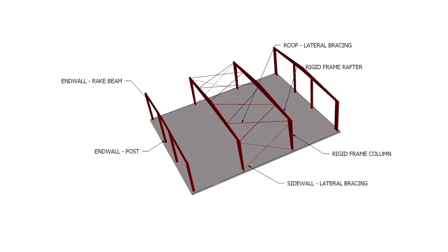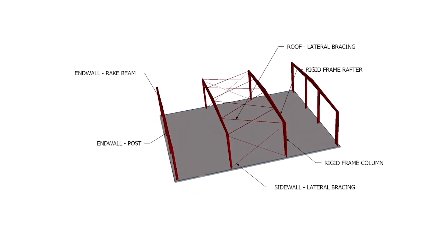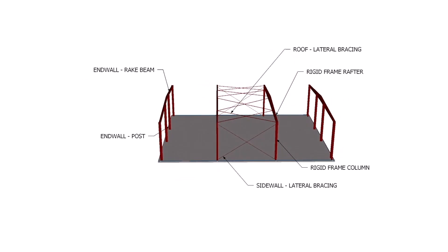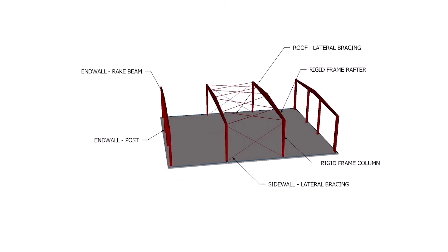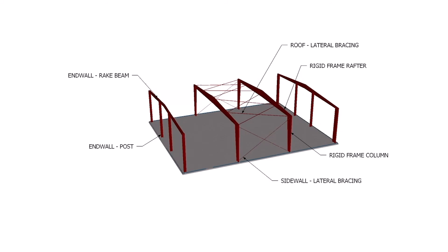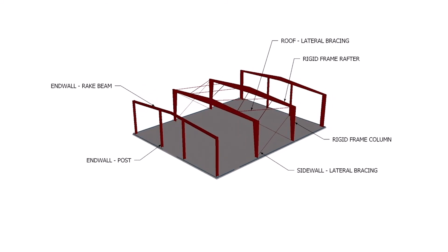These primary frames carry gravity loads as well as transverse lateral loads. Lateral bracing or X-bracing in the side wall and roof are used to carry longitudinal lateral loads. This will be explained in the load path animation.